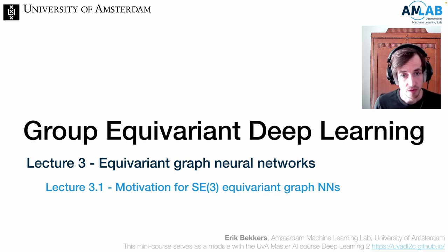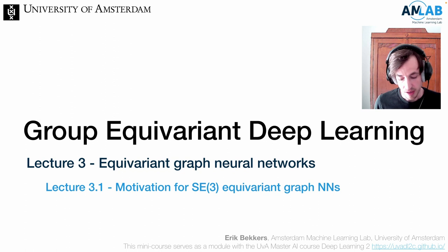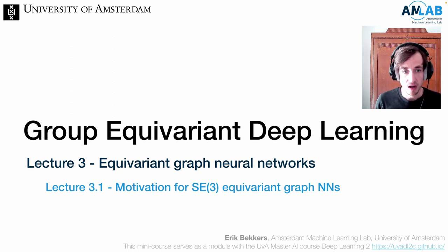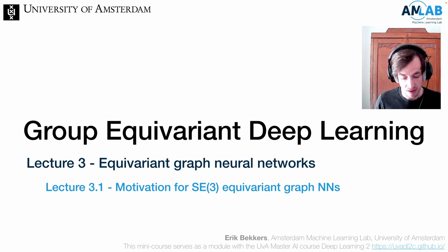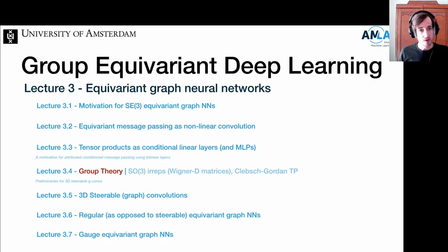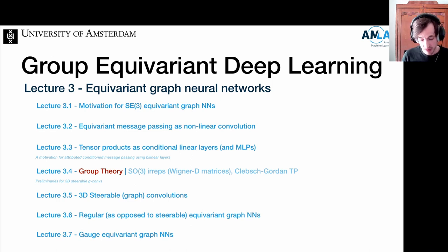Once you talk about flexible frameworks, graph neural networks are the way to go. So in this sequence of videos, it's all about graph neural networks, how to make them equivariant, and really understand the theory behind them. Let's start off with an overview of what to expect in the following videos. We'll start off with a motivation for equivariant graph neural networks, with some examples coming from the scientific domains.